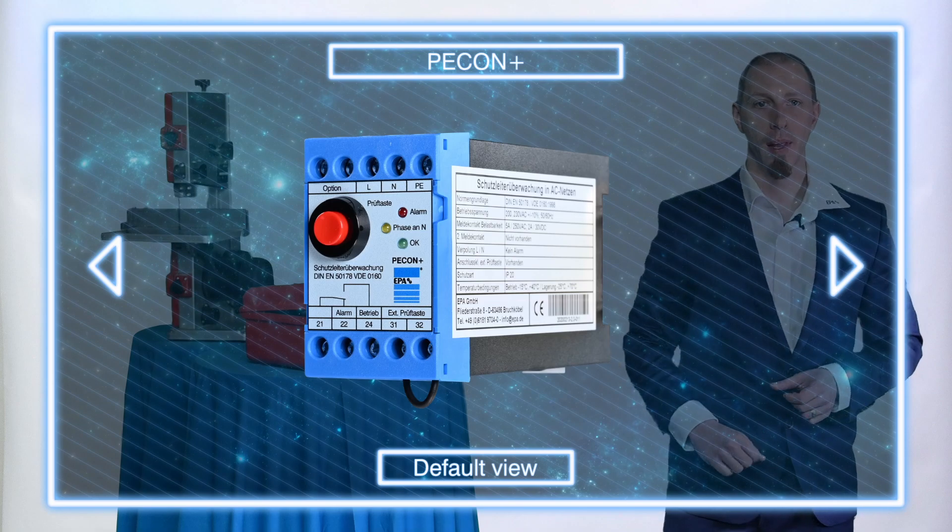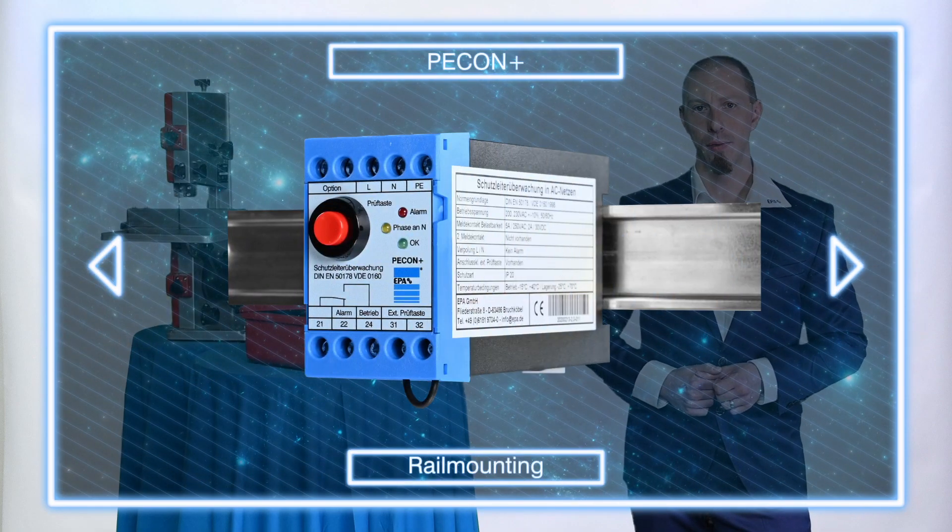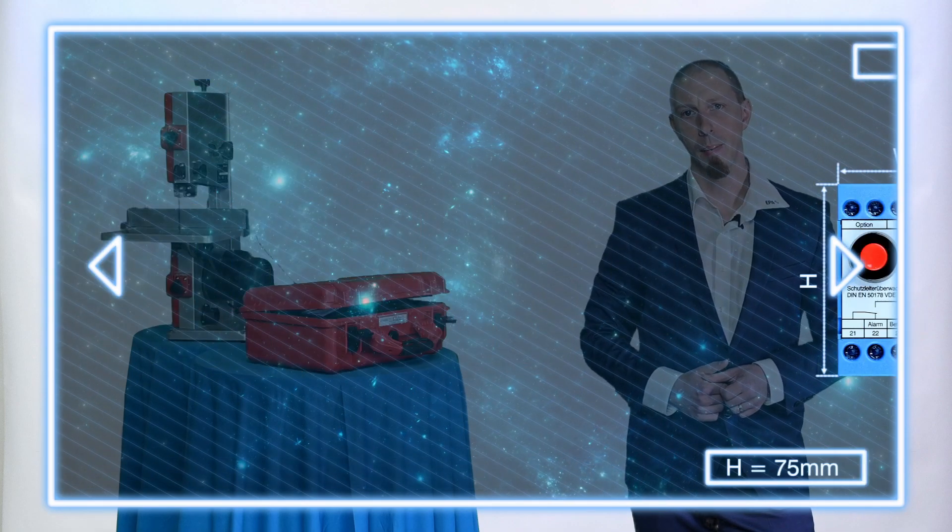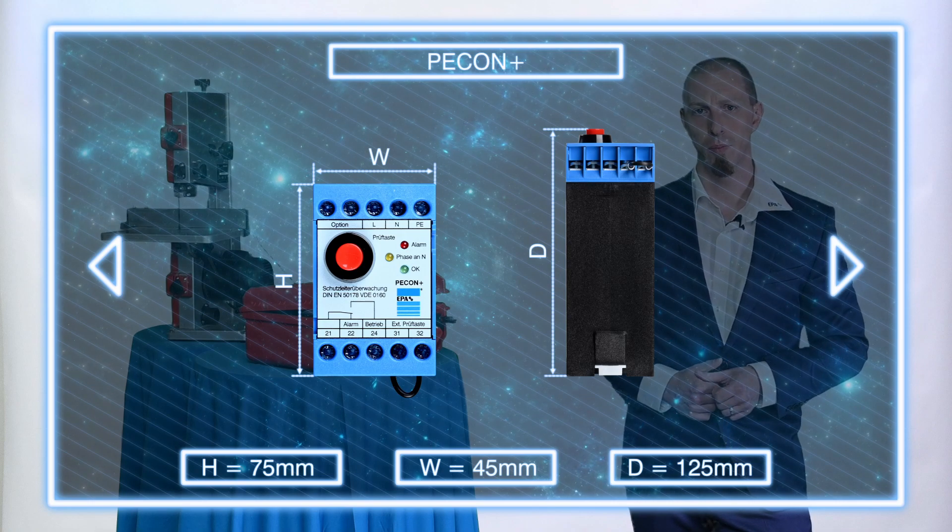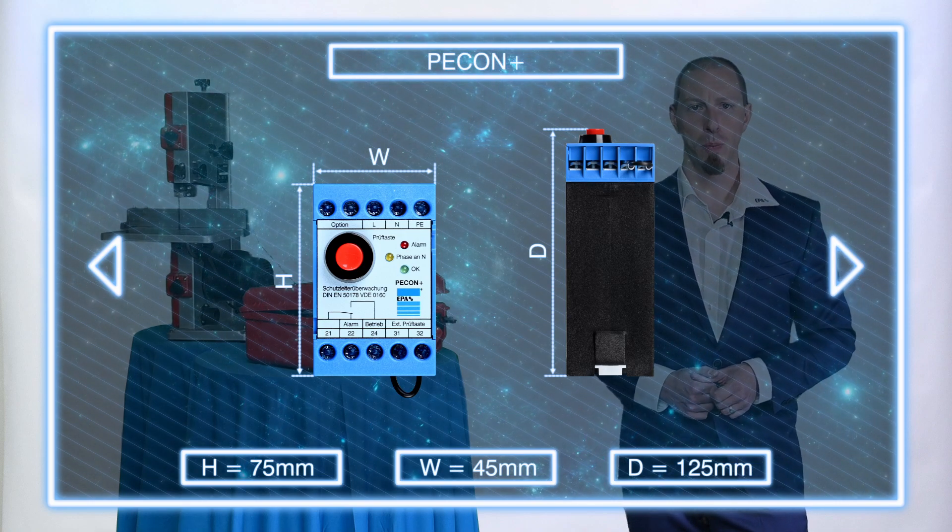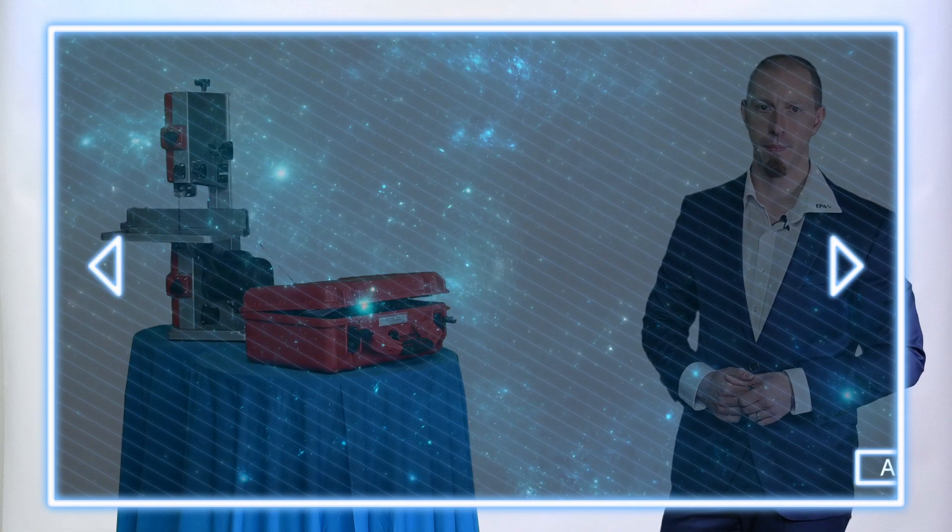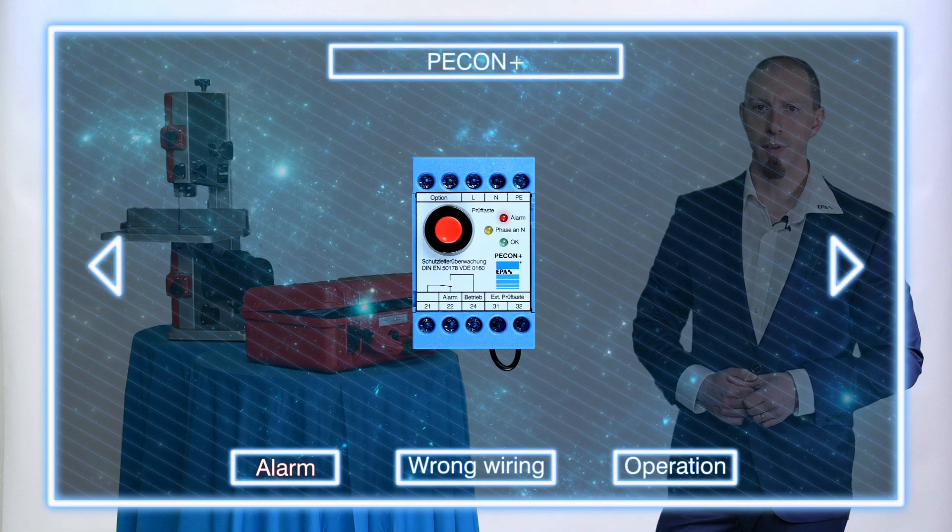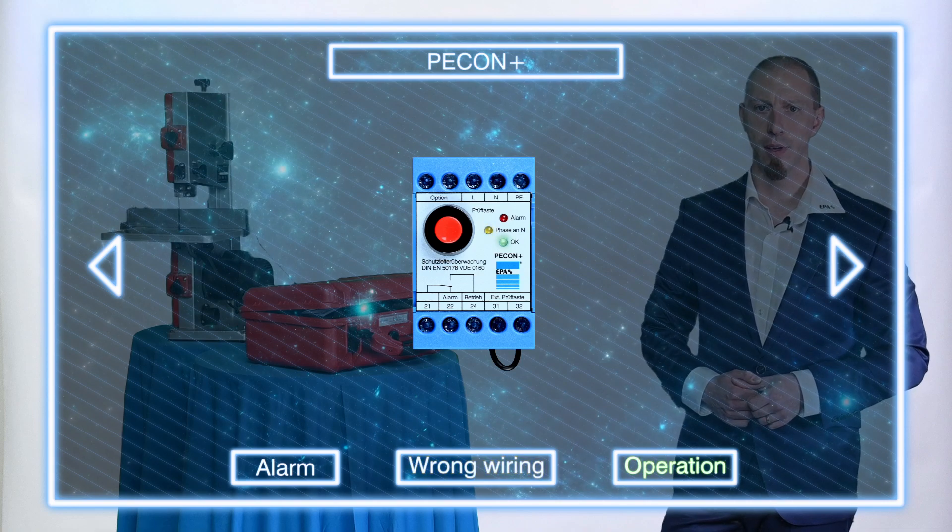Let's take a closer look at the unit. The pecan plus is a device for top head rail mounting. With its dimensions of 75 to 45 to 125 millimeters in height, width, and depth, it can easily be accommodated in the control cabinet. On the front of the unit are the status LEDs and a test button.